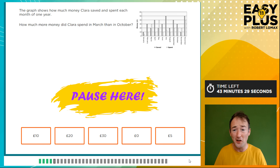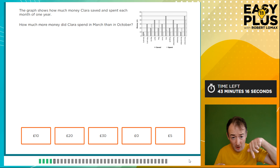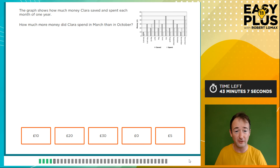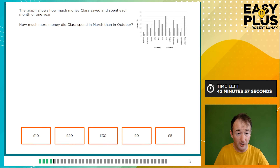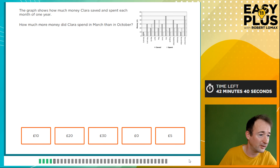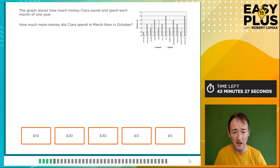The graph shows how much money Clara saved and spent each month of one year. Make sure your video is set to high quality so you can see these details. The saved amounts are shown by a darker bar and the spent amounts by a white bar. We're looking at spending in March and October. In March she spent £30 and in October she spent £20, so we need to do 30 minus 20, which gives us £10.